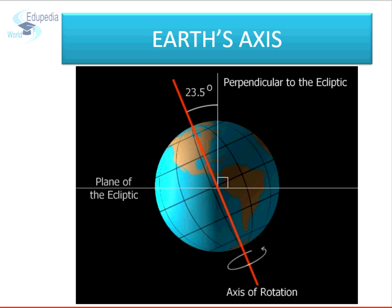The axis of the earth is inclined at an angle of 66.5 degrees from the plane of the ecliptic, or 23.5 degrees from the perpendicular to the plane of the ecliptic. The inclination is always in the same direction — towards the pole star in the celestial sphere. As the pole star is at an infinite distance from the earth, the axis of the earth remains inclined in the same direction in all changing positions around the sun. This is called the parallelism of the axis.